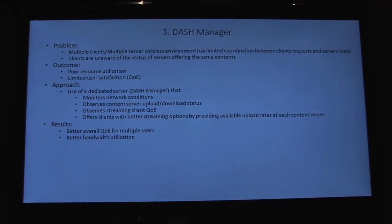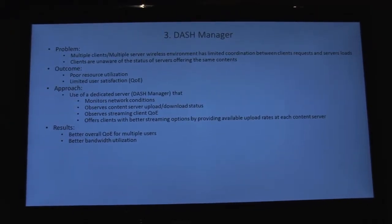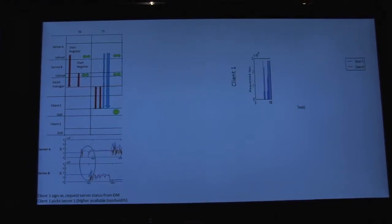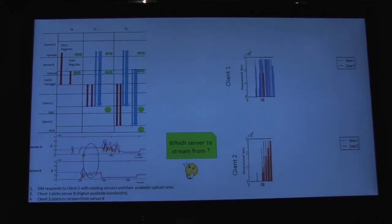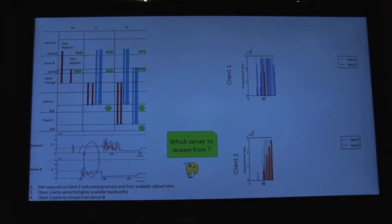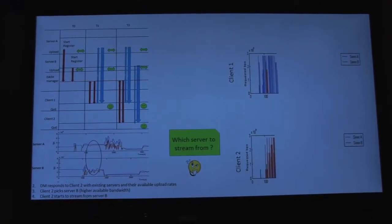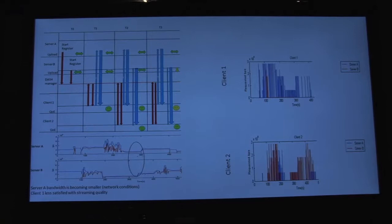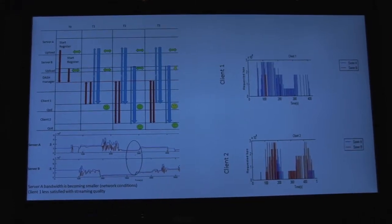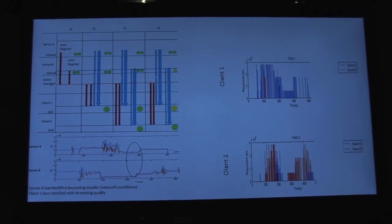The third approach we are proposing is called the DASH Manager. This is very useful when you have a multiple-client, multiple-server environment. The objective of the DASH Manager is to act as a coordinator — it figures out how many clients are streaming the same content and how many servers are offering that content, while continuously getting updates from servers about their streaming capabilities.